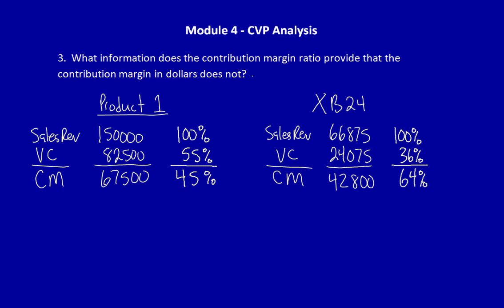Because when you look at product XB24, for every dollar of sales, we consume $0.36 in order to cover our variable costs. That means that we end up having $0.64 in our pocket.